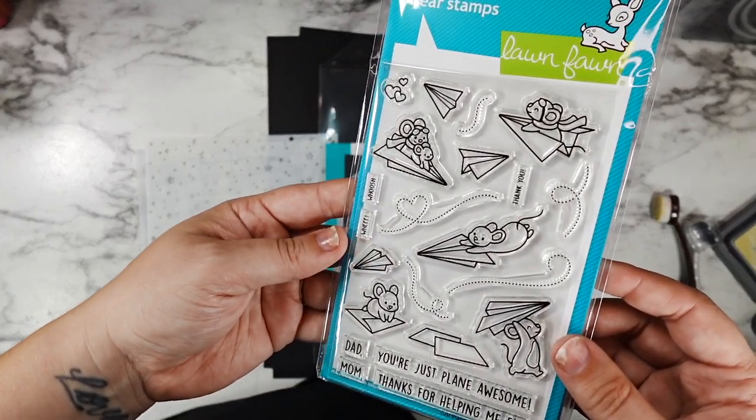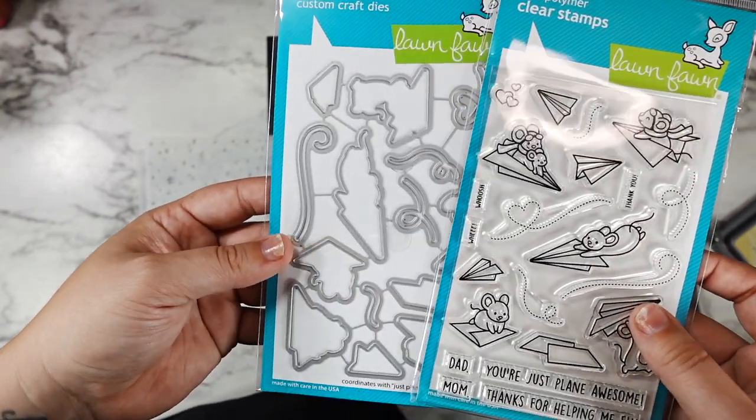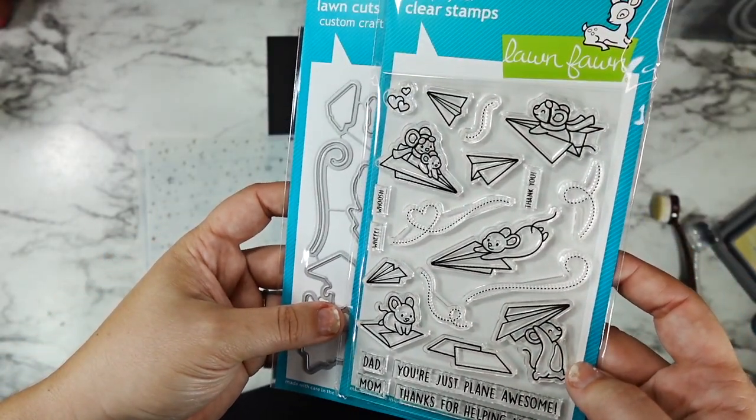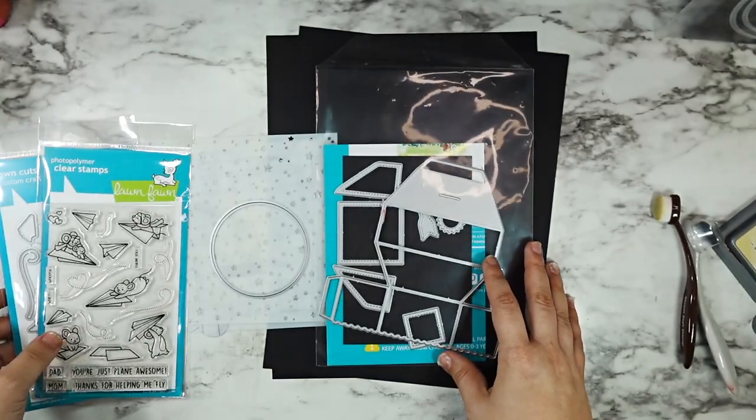Hi friends, this is Caitlin. Welcome back. Today we're going to be using the Just Plain Awesome stamp set from Lawn Fawn to create a pop-up platform Father's Day card.